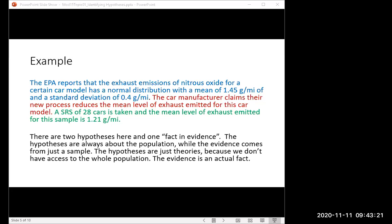So in this story, there are two hypotheses and one fact. The hypotheses are always about the population, but the fact, the evidence, just comes from a sample. The hypotheses are just theories. The evidence is an actual fact, but since it's just about the sample, it may or may not be the truth about the whole population.